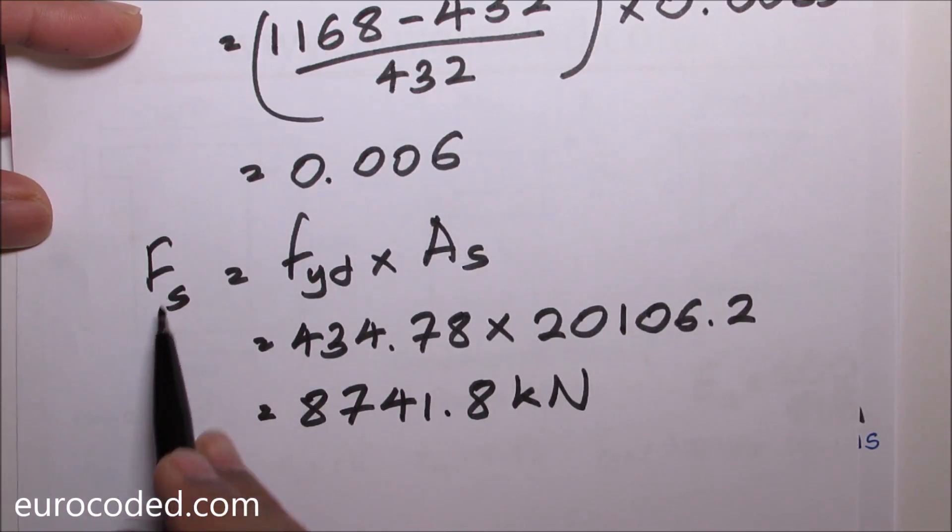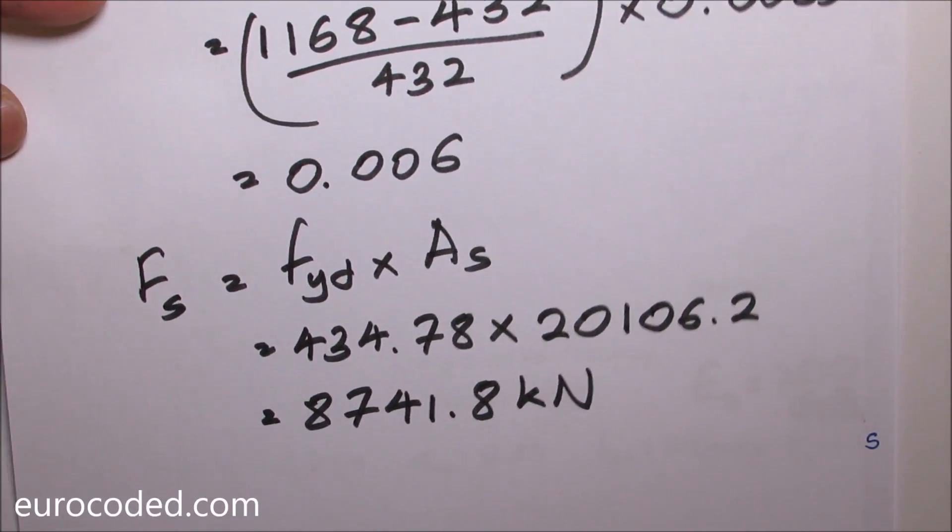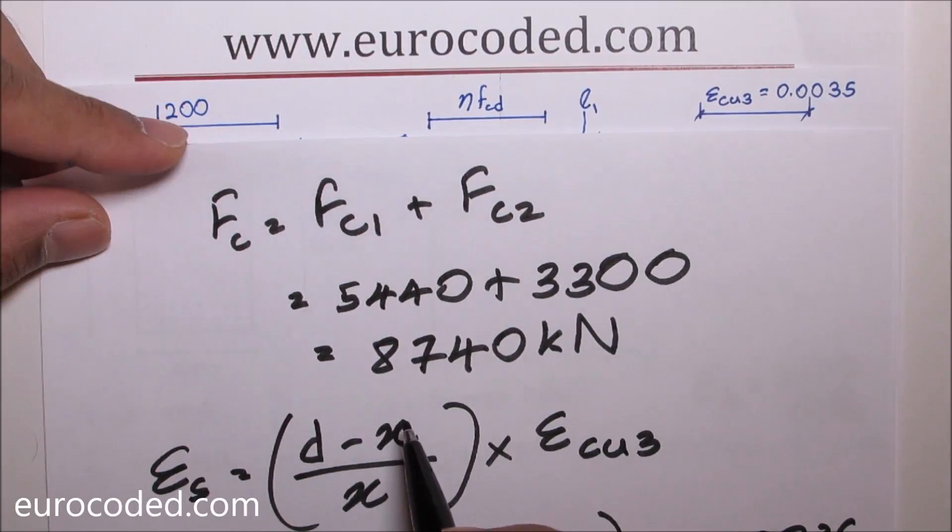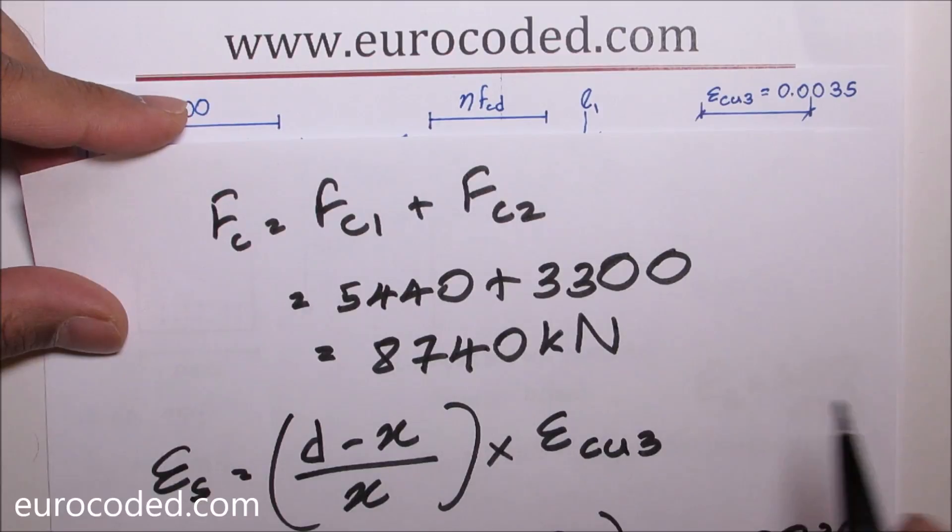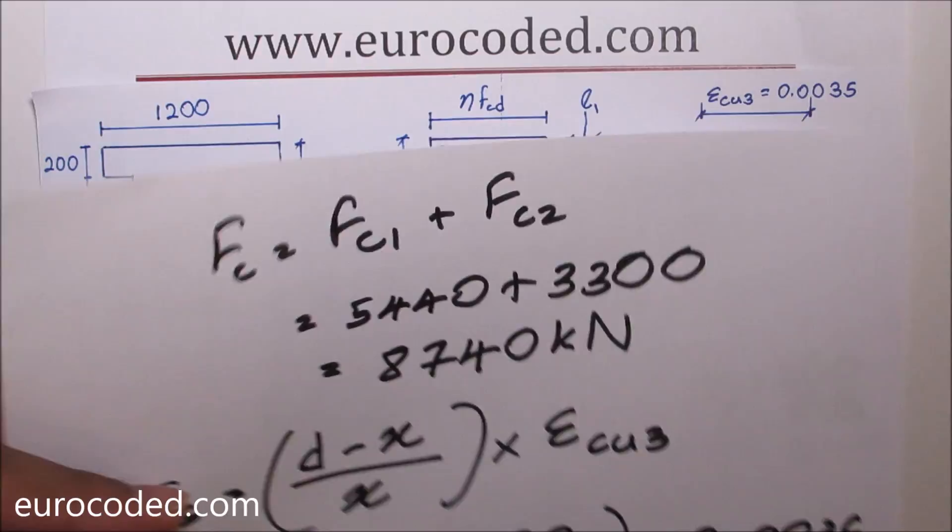You can see that this FS value which is 8742 kN is almost equal to total FC value which is 8740 kN. So our compressive and tensile forces are in balance.